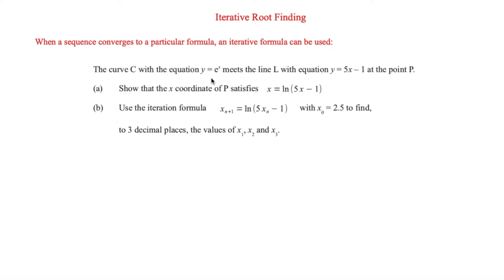The curve C with equation y = e^x meets the line L with equation y = 5x - 1 at the point P. First we need to show that the x-coordinate of P satisfies x = ln(5x - 1). To start, we say that e^x = 5x - 1, because both expressions equal y so they must equal each other.